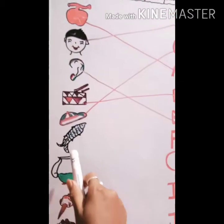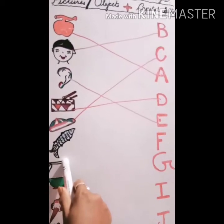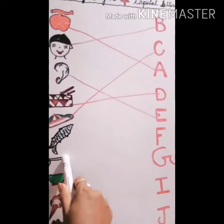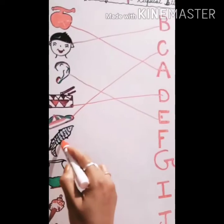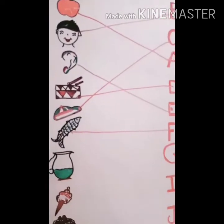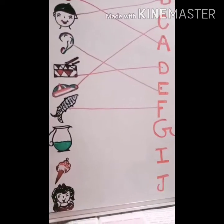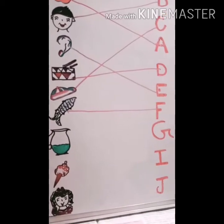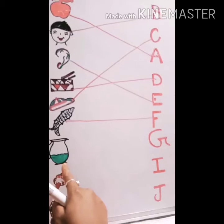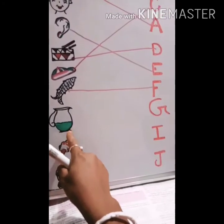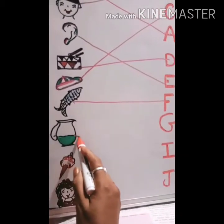The next picture is F for fish. Can you recognize it, children? Where is F? Here. The next alphabet is G, but here the picture is J for jug. Always you should know the first alphabet — J for jug.